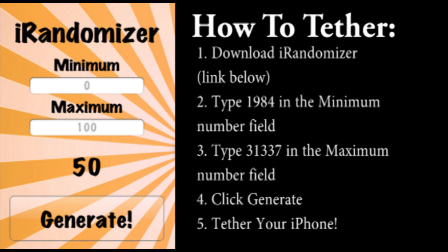Once you download iRandomizer Numbers — link in the description — you're going to see a minimum and maximum number field. It lets you generate a random number. What you're going to do is type 1984 in the minimum field and 31337 in the maximum field, then hit Generate, and a tethering configuration screen will appear. From there you can proceed to tether your device.